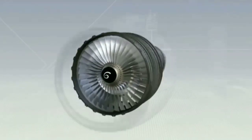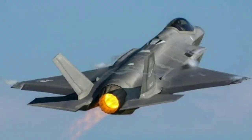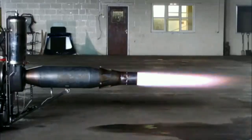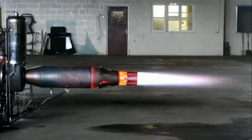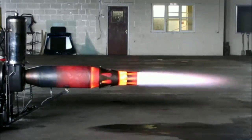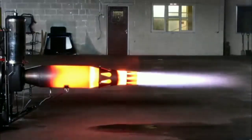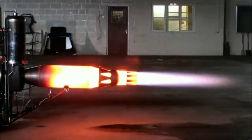An afterburner is used in jet engines or military subsonic aircraft. It increases thrust without additional engine weight, but at the cost of high fuel consumption and decreased fuel efficiency. The afterburner injects jet fuel downstream of the turbine and reheats the gas, causing a temperature rise in the tailpipe so that gas is ejected through the nozzle at a higher velocity. Mass flow is also slightly increased due to the addition of fuel.